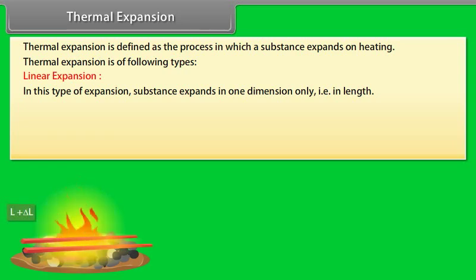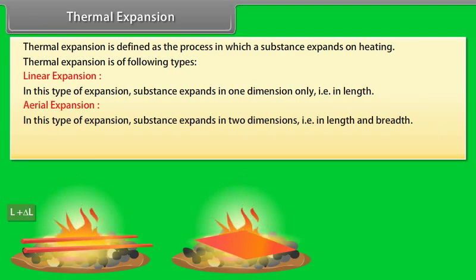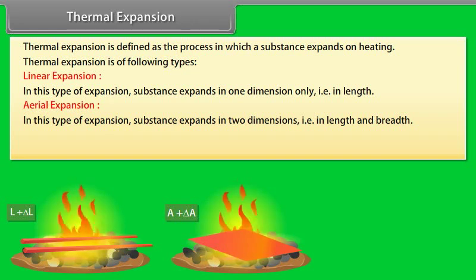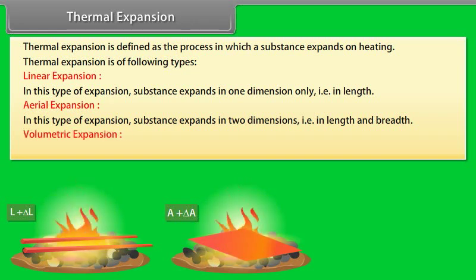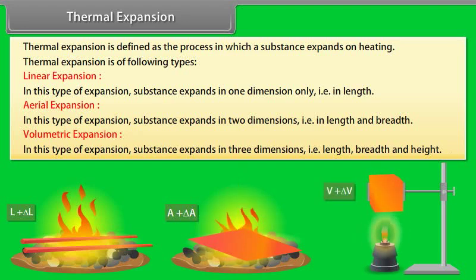Number 2: Aerial expansion — in this type of expansion, the substance expands in two dimensions, that is, in length and breadth. Number 3: Volumetric expansion — in this type of expansion, the substance expands in three dimensions, that is, in length, breadth, and height.